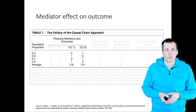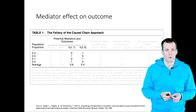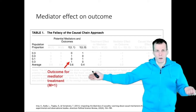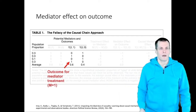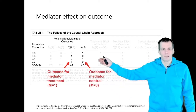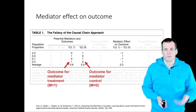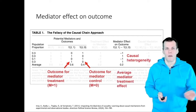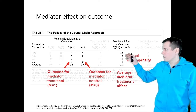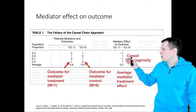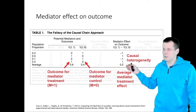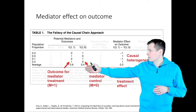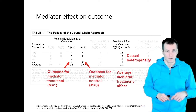Then we have two other columns showing the scenario where the mediator is manipulated — mediator set to 1 versus mediator set to zero. We can see causal heterogeneity in these mediator effects too, but the average treatment effect is also 0.2 calculated the same way: minus 1 times 0.3 plus 1 times 0.3 is zero, minus 1 times 0.1 plus 1 times 0.3 gives 0.2. So both the treatment manipulation and the mediator manipulation give causal effects of 0.2.